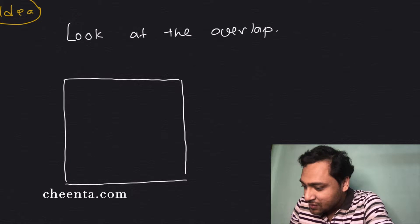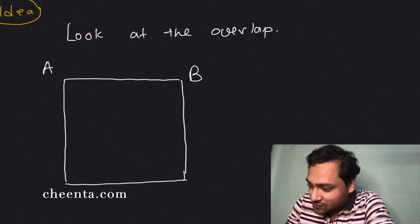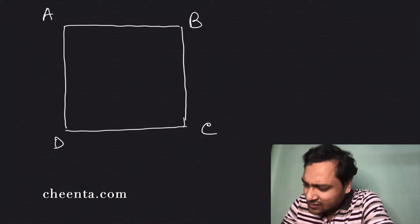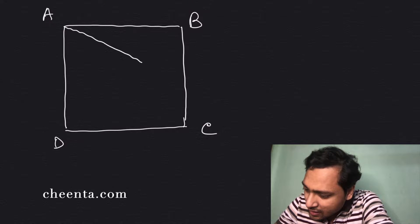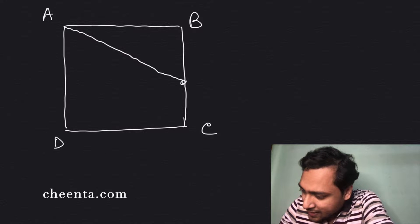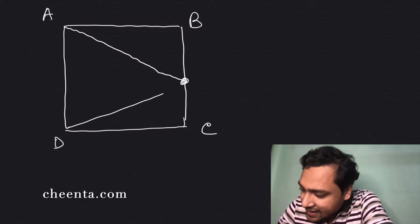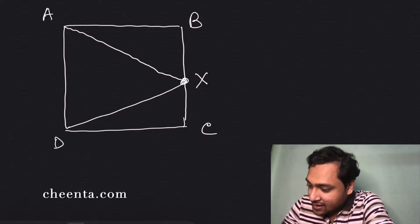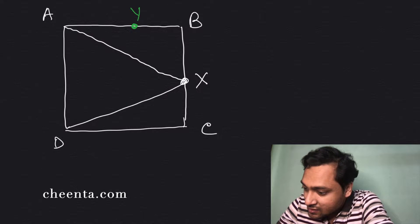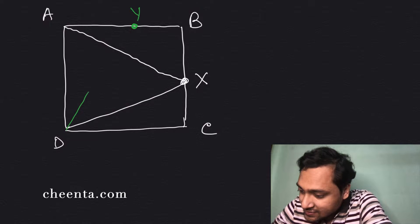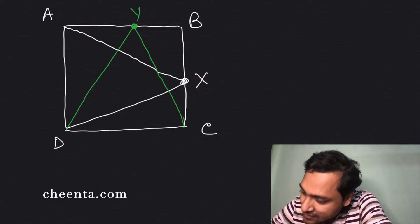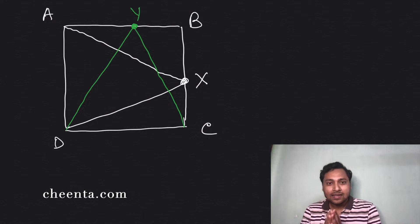You get ABCD a square, let's start with that. And let's draw a triangle AXD, a white triangle, and then maybe I can color code this, put a point Y, so DYC a green triangle.